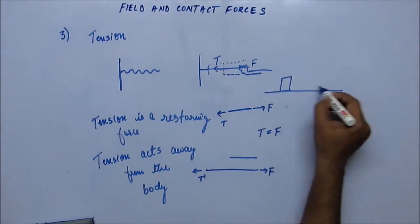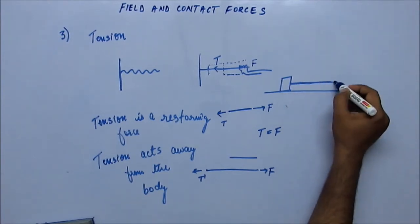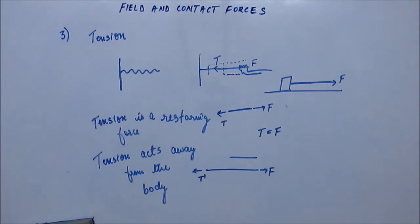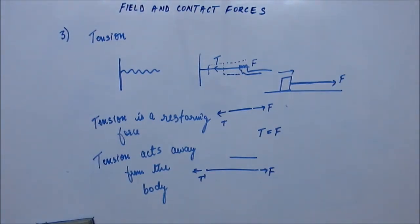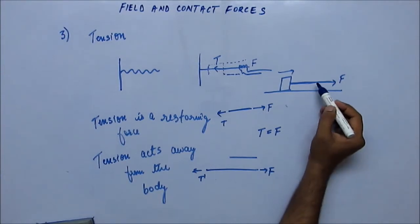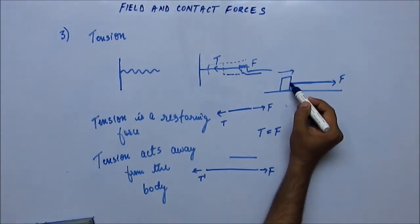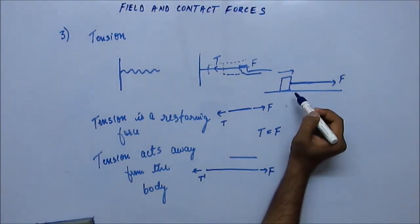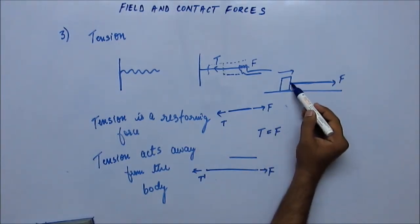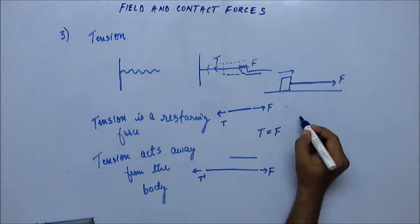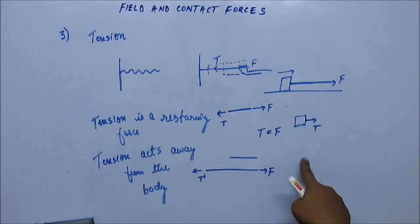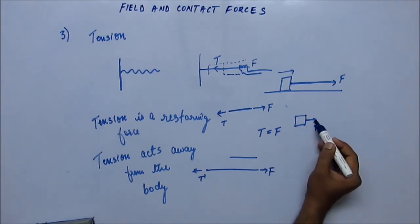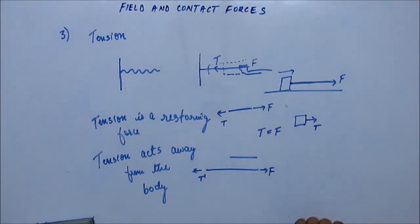Suppose there is a block kept on a floor and a string is attached to it. We are applying force with our hand pulling the string, so the whole string-block system is moving. The tension is the inward-acting force on the string. If you analyze the forces on the block with no friction, in the horizontal direction the block moves only because of tension acting horizontally on it.